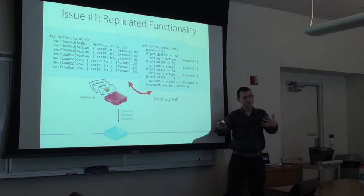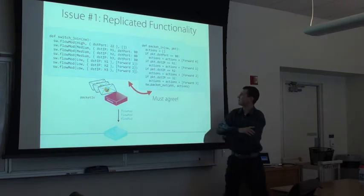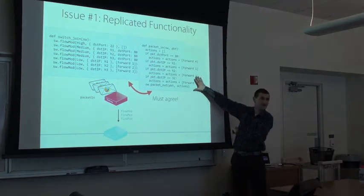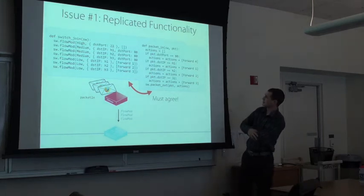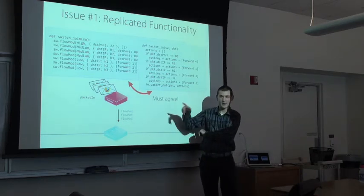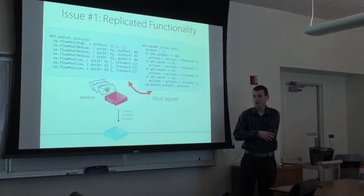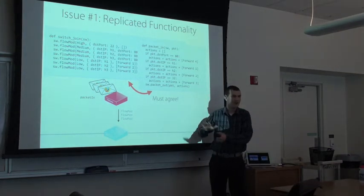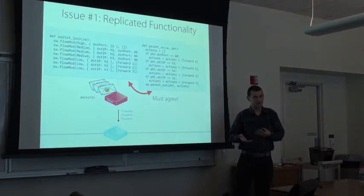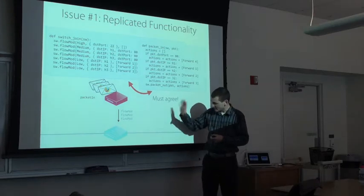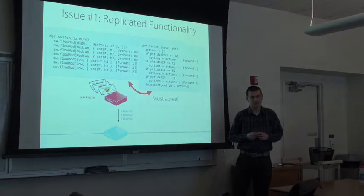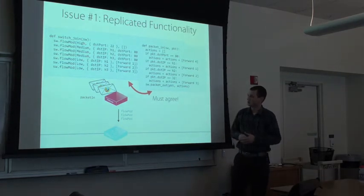This creates a problem because we now have two realizations of our policy in the controller program, and it's important that these don't disagree. You might actually notice there's a bug: the packet-in fragment doesn't correctly handle SSH traffic, so SSH will be allowed for packets that arrive while rules are being installed. You might say this is silly and we should never write programs that generate packet-ins, but in general the network is not going to be static. Your policy might change over time, so you'll have to deal with periods of transition, and this leads to replicated functionality.